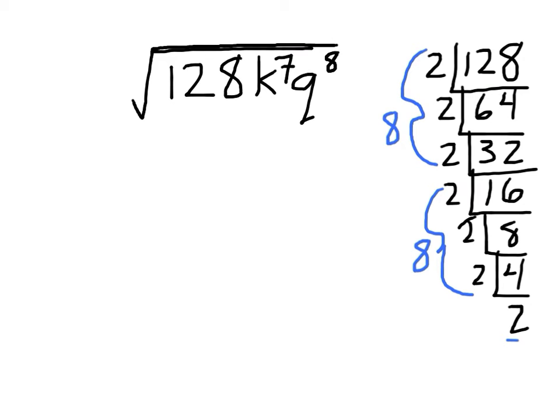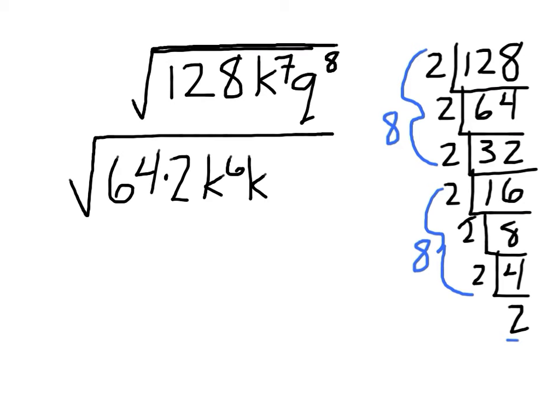Okay, so that means now this becomes, the 128 now becomes 64 times 2. We just found that out. Then we're going to make the k to the 7th be a k to the 6th times k, k to the 1. That gives us k to the 7th. And then the q has already got an even-numbered power, so we can just leave this as q to the 8th.